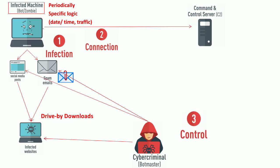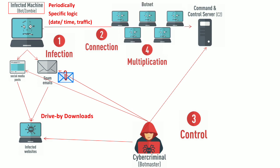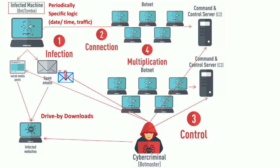The third phase is the control phase, where the cyber criminal issues commands to the infected bots through this command and control server. The fourth phase is the multiplication phase, where this entire process is repeated numerous times to infect thousands of machines connected to the internet to become part of the botnet. A hacker may also set up multiple command and control servers to control multiple botnets.